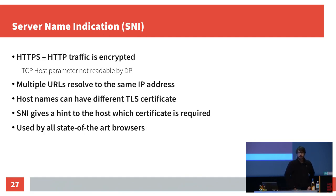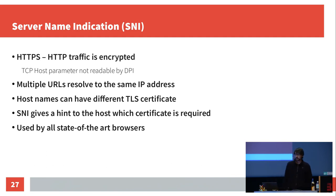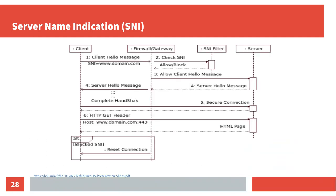In the case of HTTPS, the HTTP traffic is encrypted, so you can't use the HTTP GET hostname to filter. What they did instead was use the TLS protocol. The host in TLS has to know which domain you want to start encryption for to provide the correct certificate. Therefore, in the TLS hello message, there's a field called Server Name Indication (SNI) which is transmitted in clear text, giving a hint about the host you want the certificate for, and that is used by all state-of-the-art browsers. When the client sends a TLS hello message, there's the SNI domain name, then packet inspection checks it — if allowed, it forwards the connection; if not, it resets the connection.